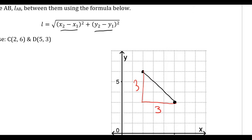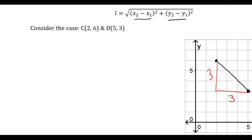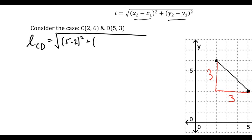Some people like to memorize formulas, but if you have a hard time memorizing this one, think about Pythagorean theorem. You need to know that finding the horizontal distance means subtracting the x's. What if it's fractions, decimals, or big numbers? You can't graph it and count. So you need to know that finding that horizontal length is a subtraction. Pythagorean theorem gives you the basis of how the formula works. Applying it to this case: the length of CD equals the square root of (5 minus 2) squared plus (3 minus 6) squared.